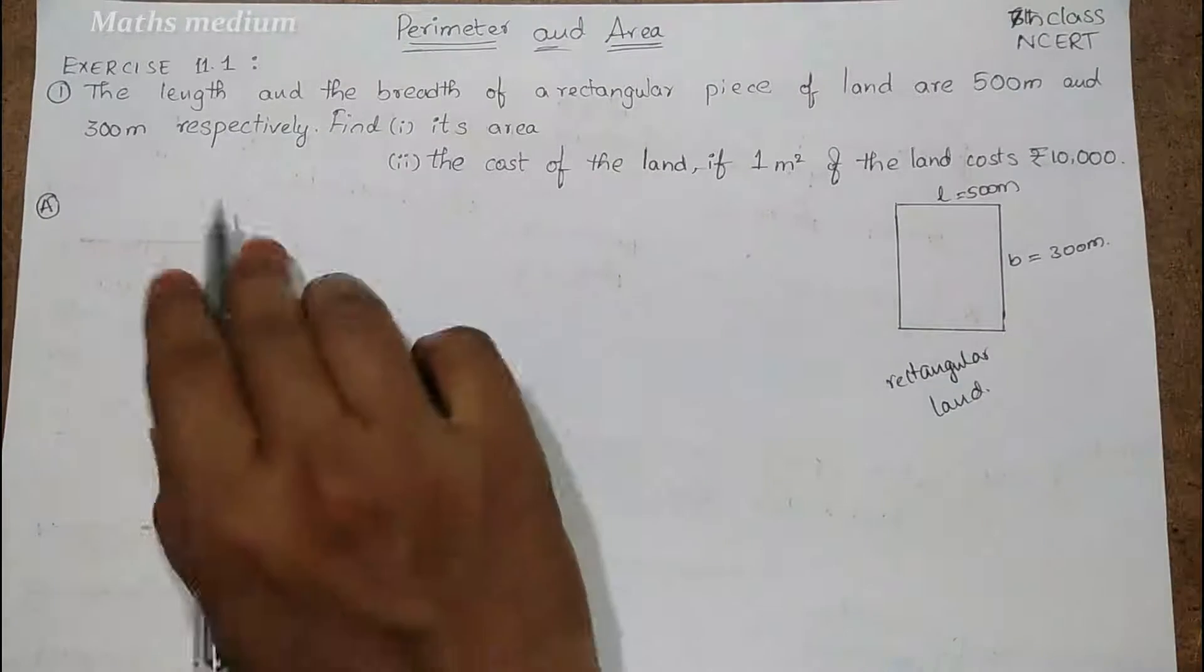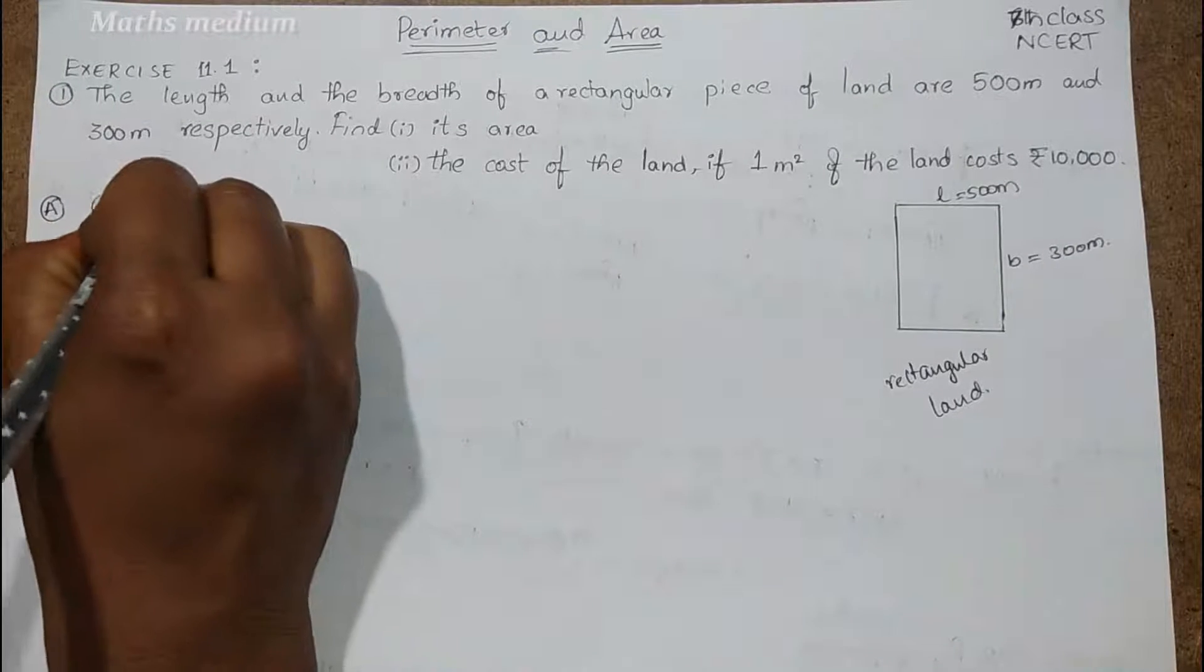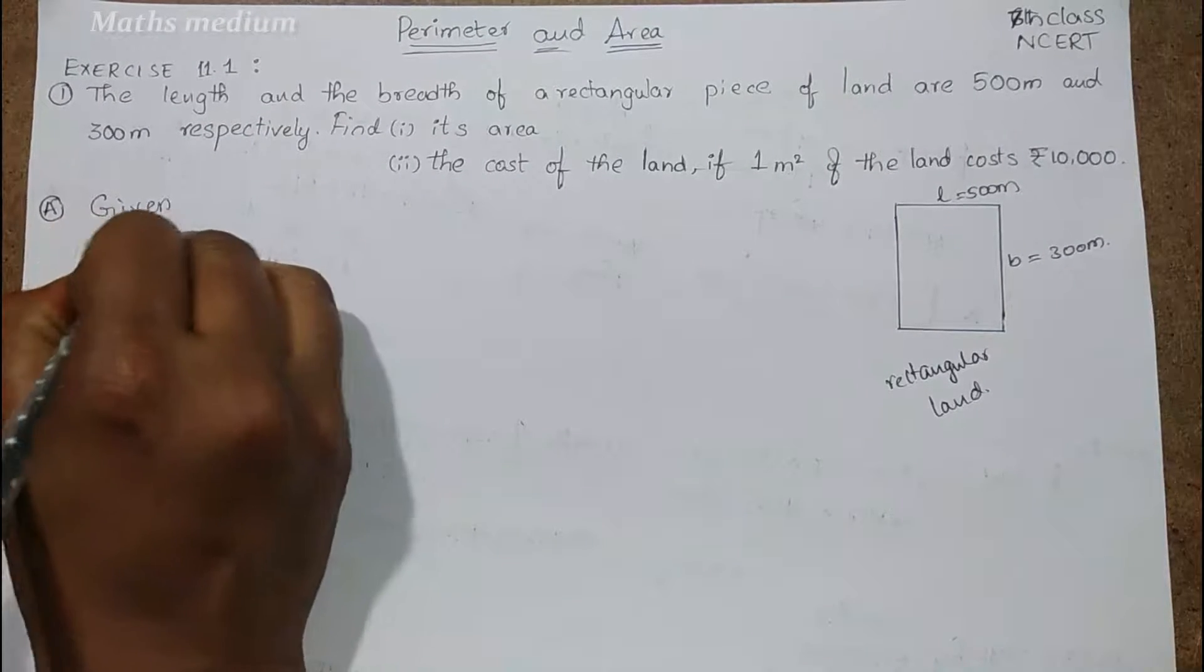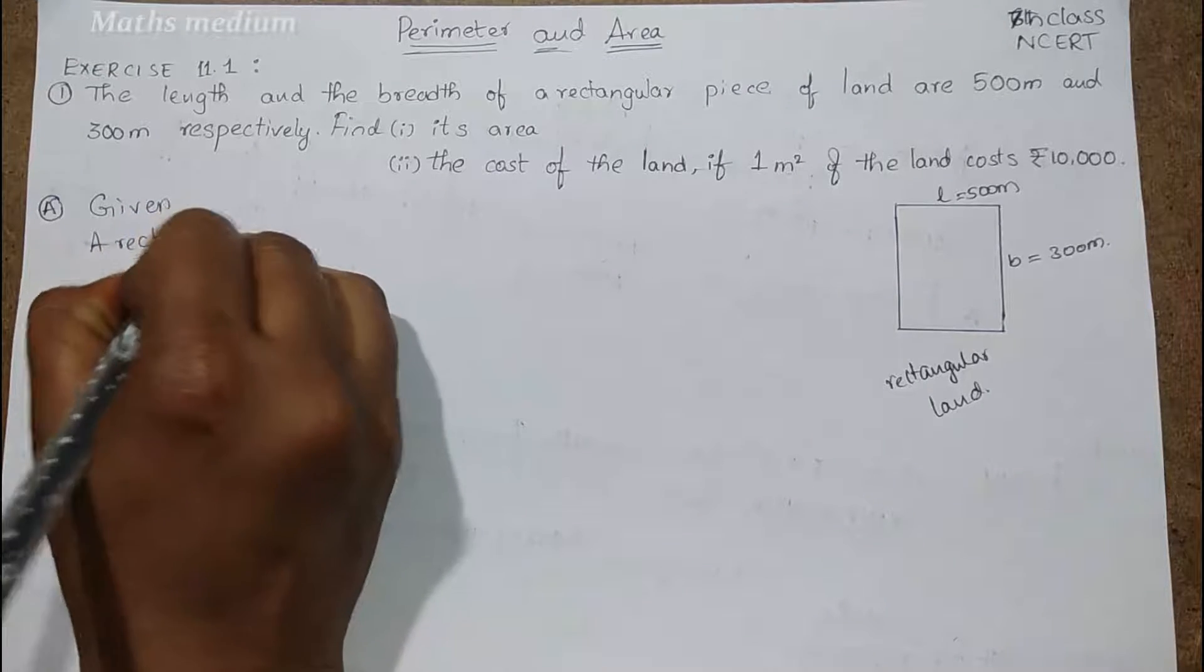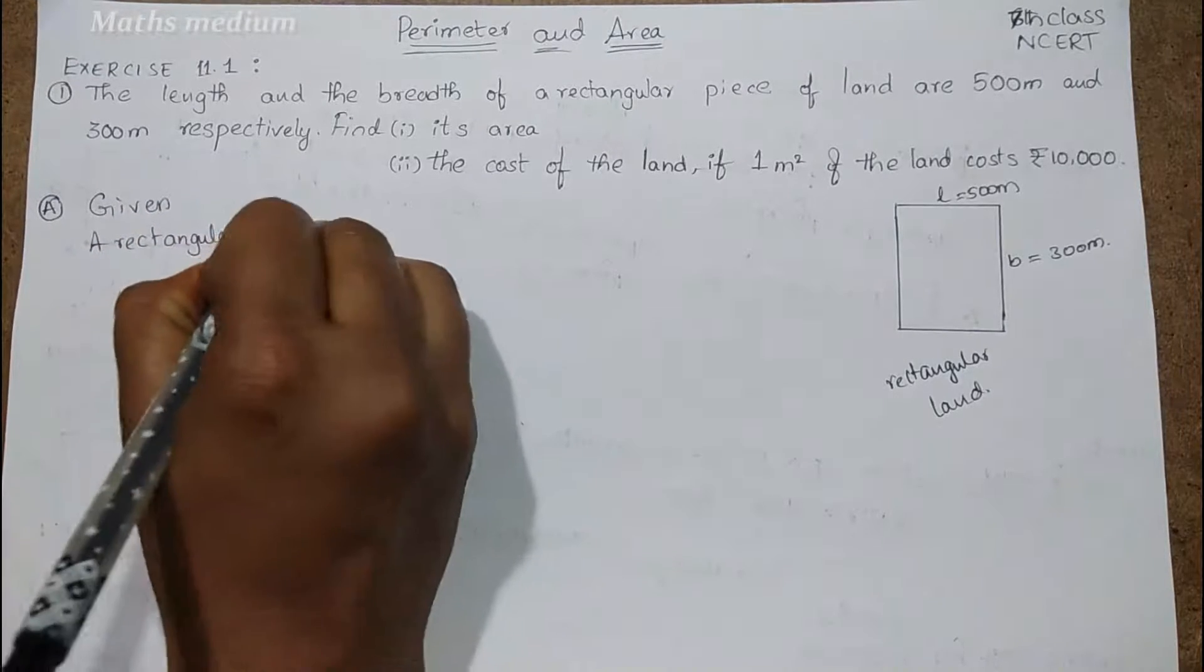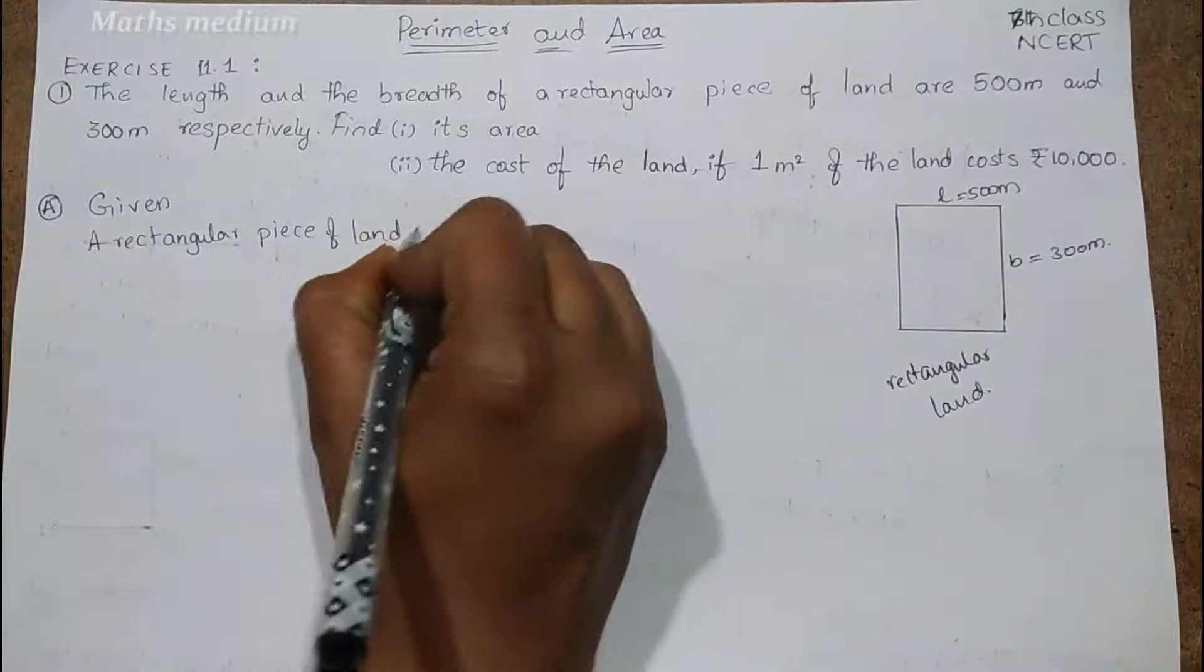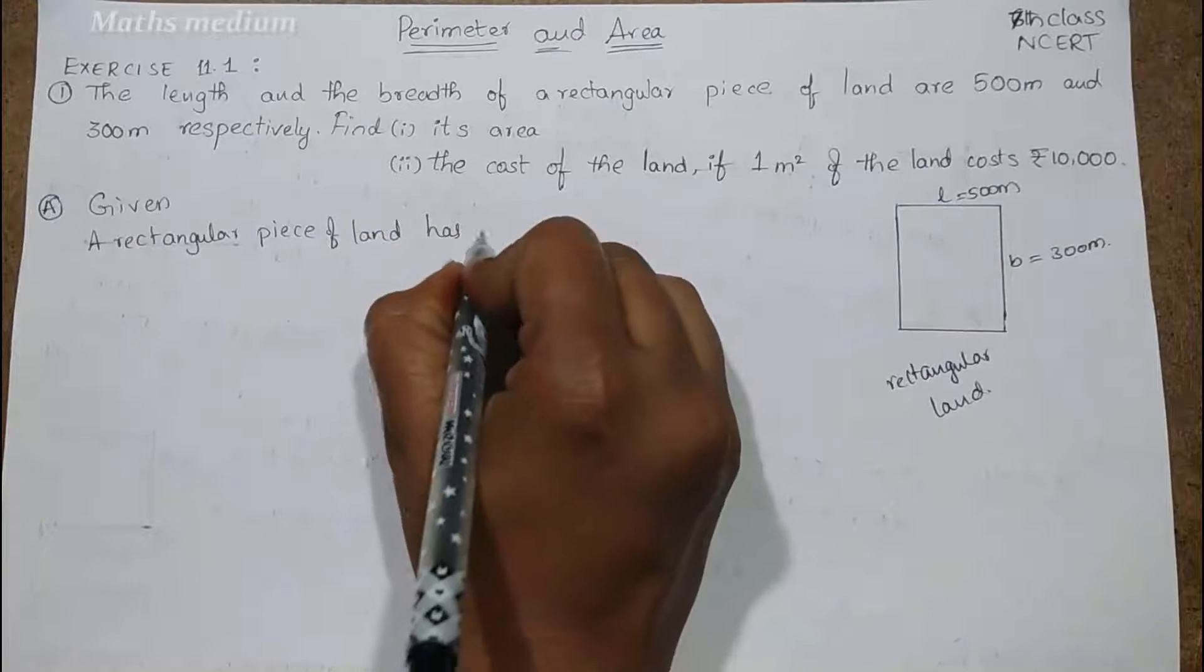Now we have to find the area. So write the given: a rectangular piece of land has L equal to 500 meters and B equal to 300 meters.